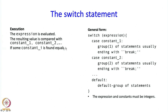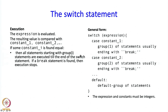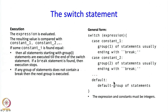If some constant i is found equal — say constant 2 is found equal and constant 1 is not — then all statements starting with group i are executed. If a break statement is found, then this switch statement execution is over and control goes to the next statement following the switch. If there is no break, then it executes the next group of statements and the next, and so on, until a break statement appears or the last statement in whatever group is executed.